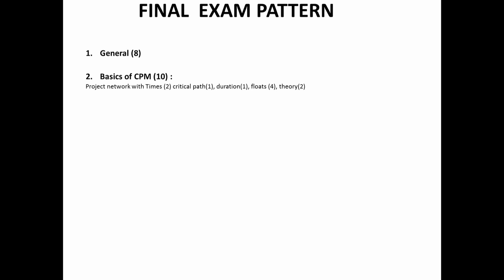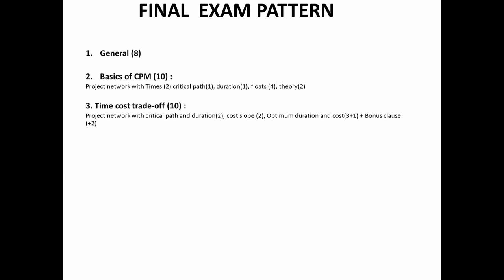Now, we come to the issue of the final exam pattern, which I think most of you will be certainly interested in. We have actually allotted about 8 marks for the final exam in the general category of general project management, about 10 marks in the basics of critical path method, and 10 marks in the cost-time trade-off. The further break-up of these marks is given below.